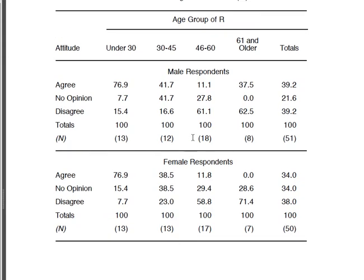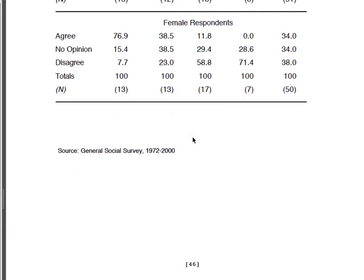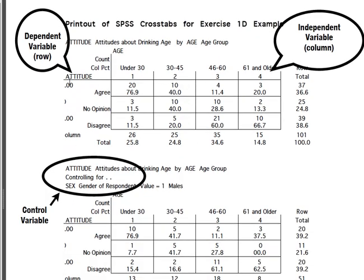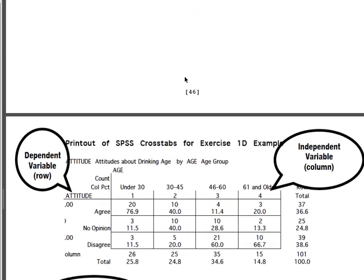Now, where did these numbers come from? I don't want you to panic when you see a whole bunch of numbers and think you don't understand this — you'll see how really easy it is. In the book I've drawn a diagram to make it a little easier. Your dependent variable is always going to be your row variables. In this case, looking at attitudes about drinking age, your rows are the attitudes — whether people agreed, had no opinion, or disagreed. The independent variable is the age, and the control variable is especially important because you'll need it for your multivariate table.